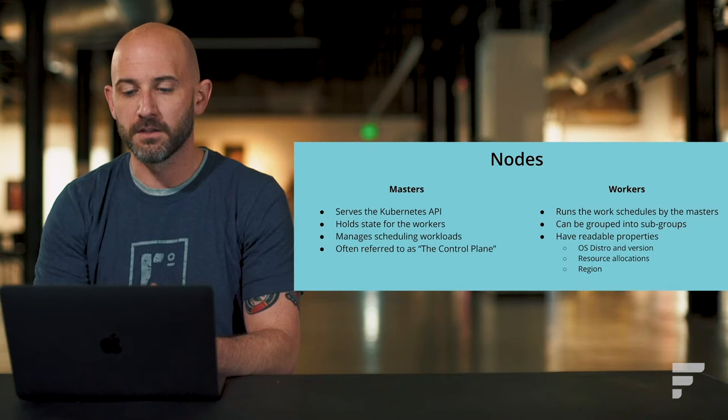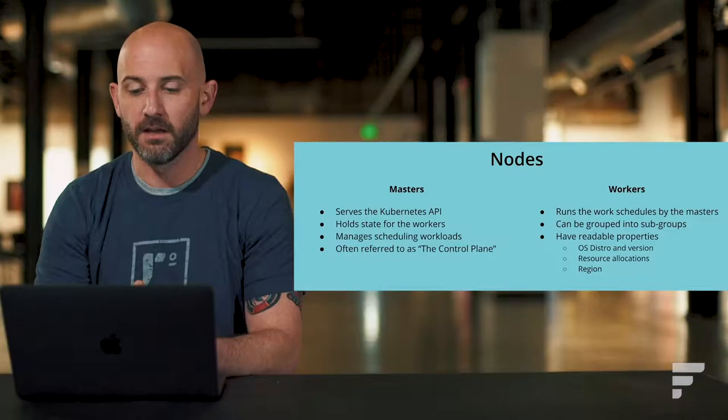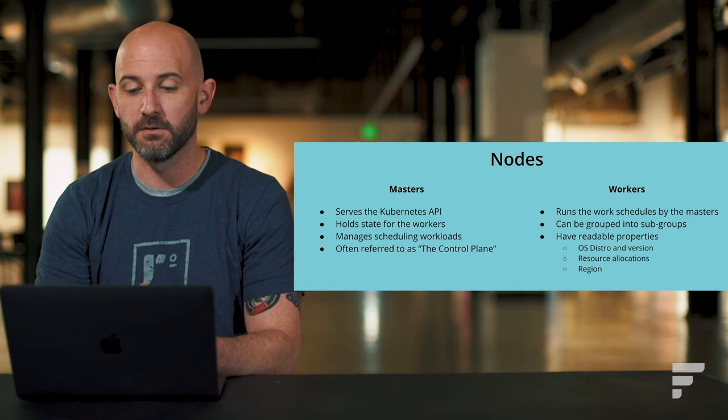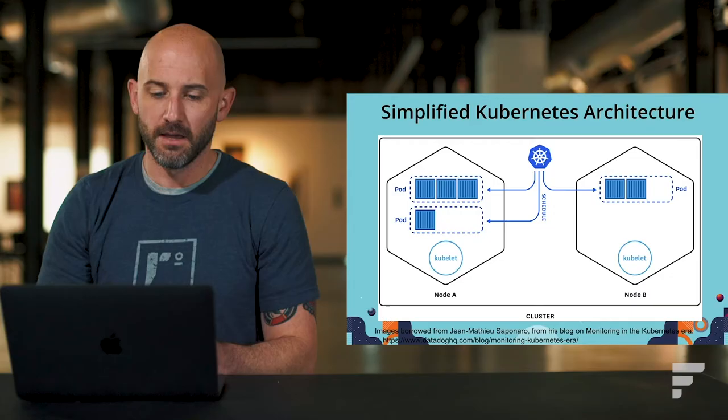Workers are where most of the work gets done. Workers run work scheduled by the masters and can be grouped into subgroups called pools, allowing you to run workloads with different resource requirements on appropriately typed nodes. Nodes also have readable properties accessible through the API — you can get OS distro and version, resource allocation, and even region if you're running a multi-regional cluster in the cloud.